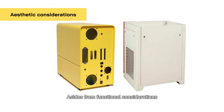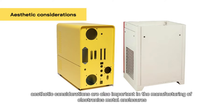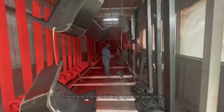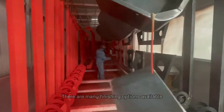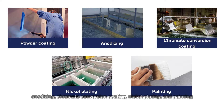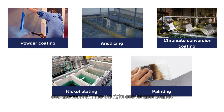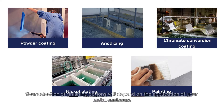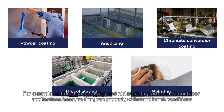Aesthetic considerations are also important in the manufacturing of electronics metal enclosures. There are many finishing options available, including powder coating, anodizing, chromate conversion coating, nickel plating, and painting. Each finishing technique has its unique features and advantages, and you must choose the right one for your project. Your selection of finishing options will depend on the application of your metal enclosure. For example, options like anodizing and nickel plating are ideal for outdoor applications because they can properly withstand harsh conditions.